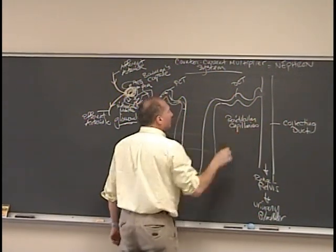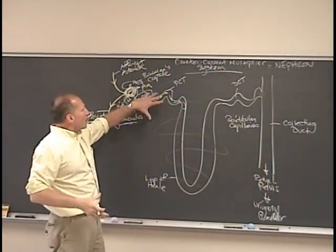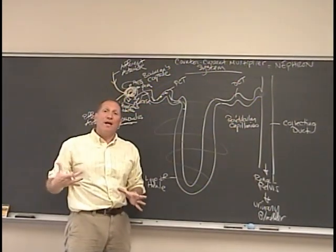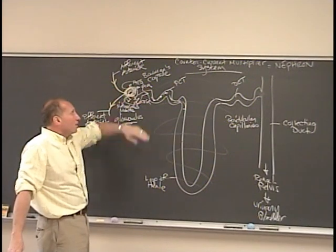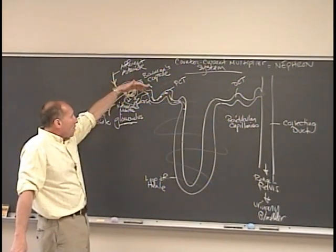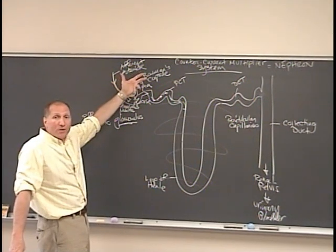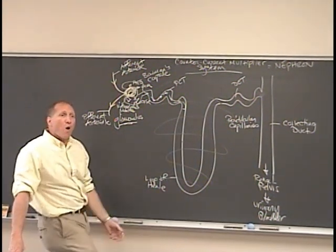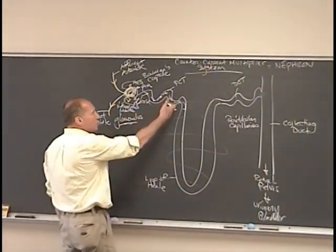The peritubular capillaries will take whatever is within this nephron back into the blood, because not all of the materials that end up going into the nephron are bad materials. Some amino acids and glucose and even water, those are substances that the body does not want to get rid of. And so you want to get those back into the blood.